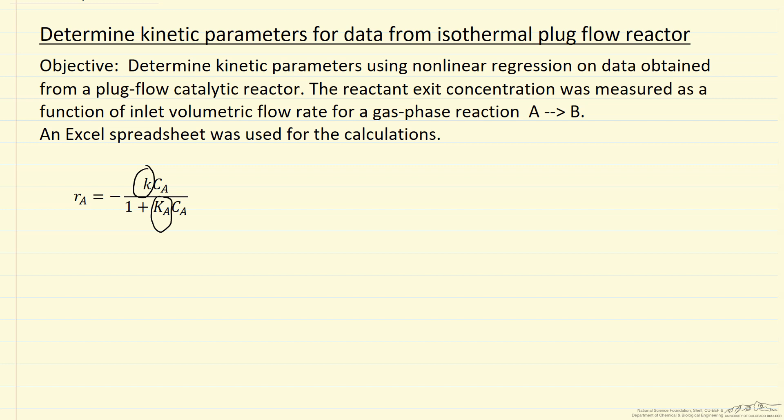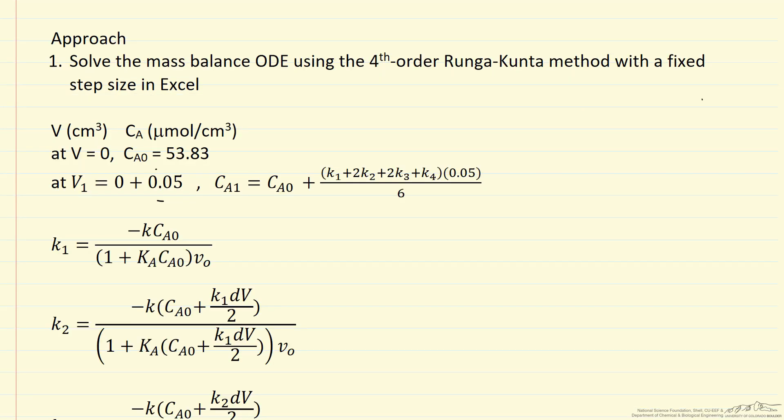What we're going to do is go through the approach and the steps we use in this screencast to give you an idea, because this takes several steps within Excel to accomplish this regression. The first step is we're going to solve the mass balance ordinary differential equation for a plug flow reactor. We're going to use fourth order Runge-Kutta with fixed step size, and we're going to be able to do that in Excel.